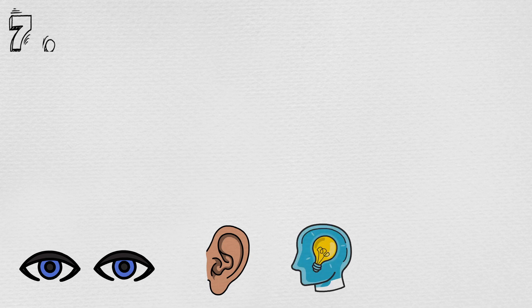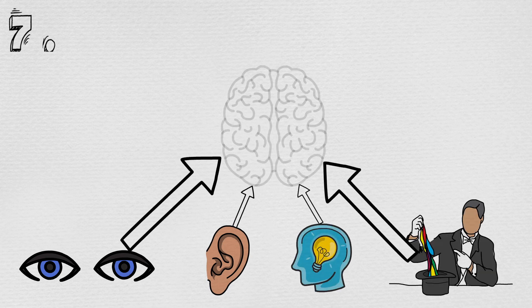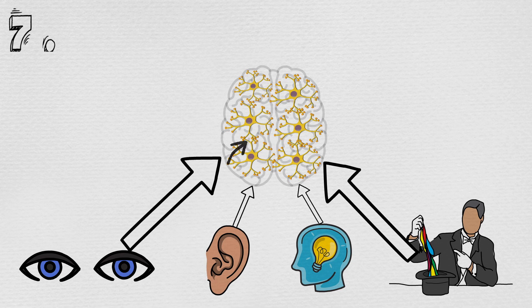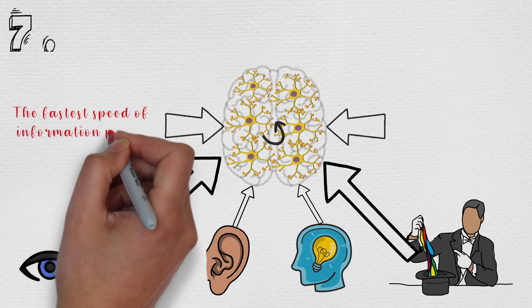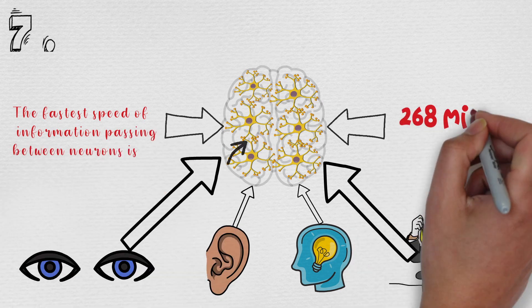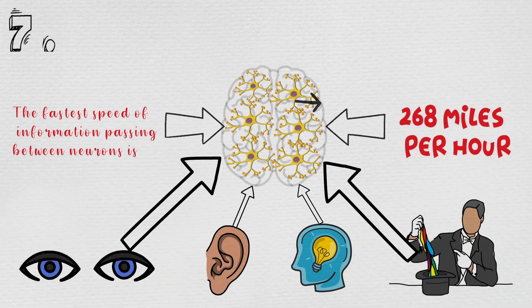Number seven: Hum jo bhi dekhte hain, sunte hain, sochte hain ya karte hain, us ki information humare neurons ke beech alag-alag speed mein daurti rehti hai. Neurons ke beech information pass honi ki fastest speed 268 miles per hour hai. That's really fast.